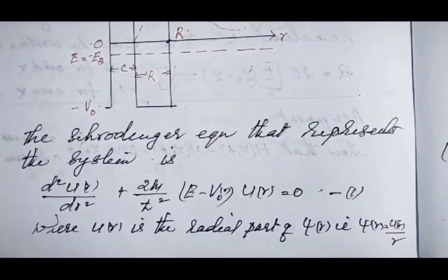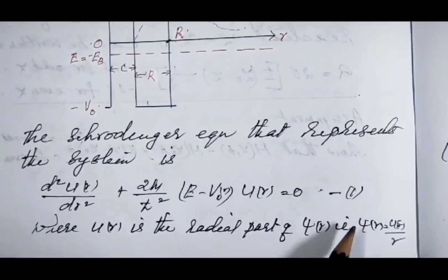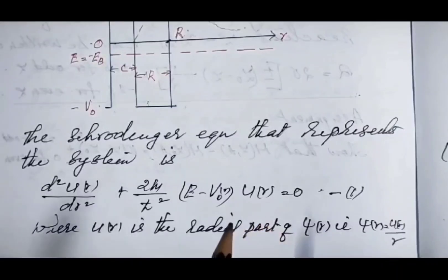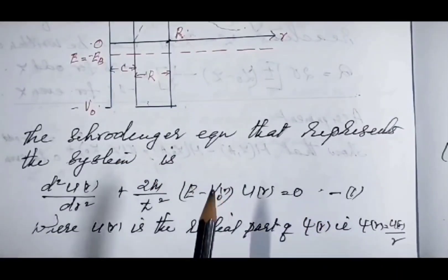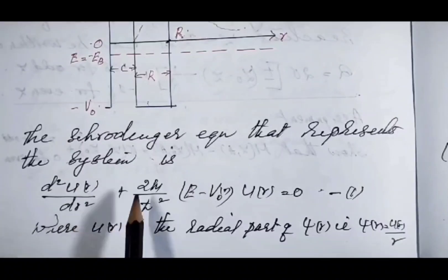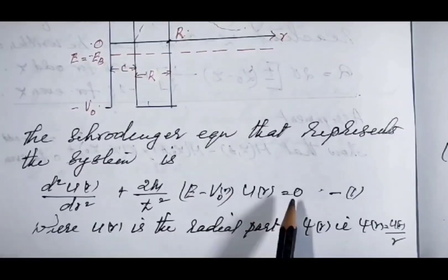We will solve the Schrödinger equation to find the binding energy of a deuteron. The wave function representing the system is ψ(r), but taking the radial part u(r), we have ψ(r) = u(r)/r. The Schrödinger equation in terms of u(r) is: d²u(r)/dr² + (2m/ħ²)(E − V₀(r))·u(r) = 0. Let us call this equation number 1.